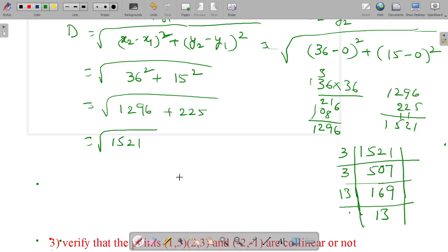So the square root of 1521 is square root of 3 into 3 into 13 into 13. So 3 into 13 equals 39.